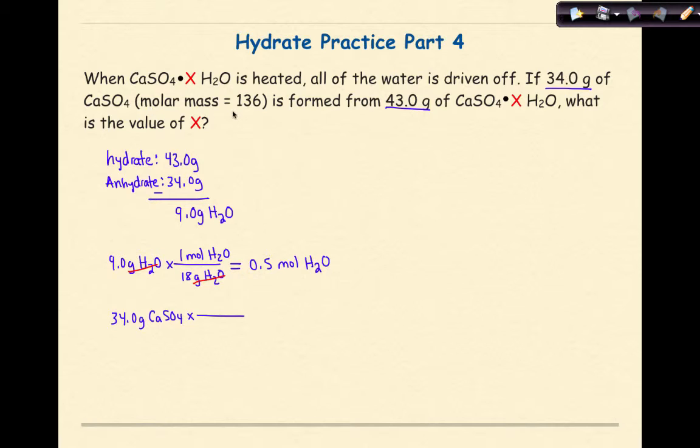That means that 136 grams of CaSO4 equals 1 mole of CaSO4. I want to make sure my units cancel, grams cancel grams.